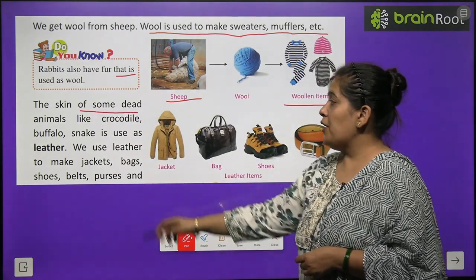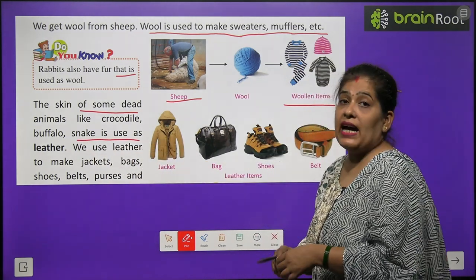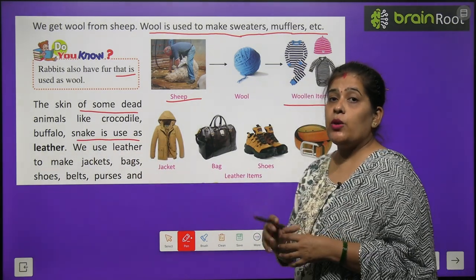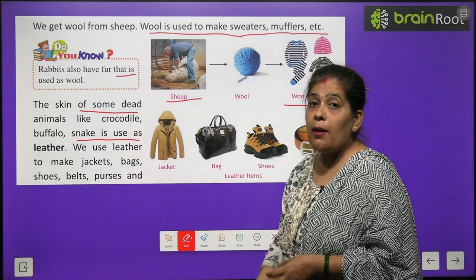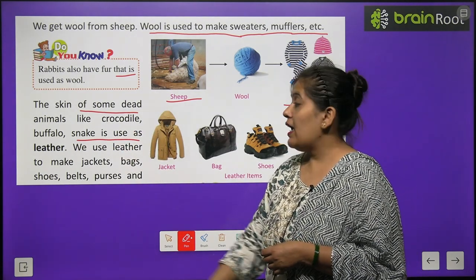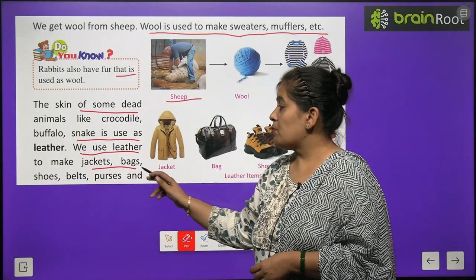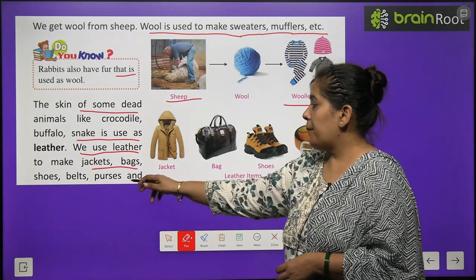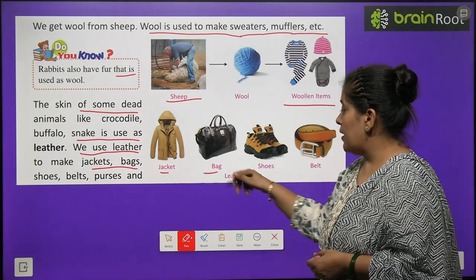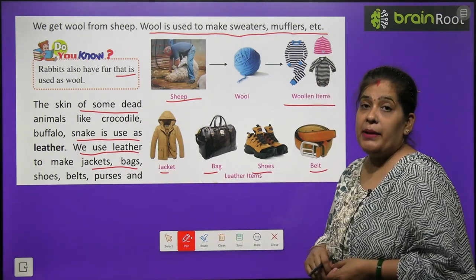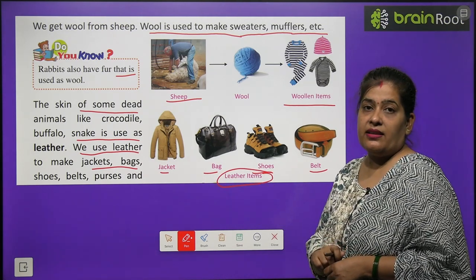The skin of some dead animals like crocodile, buffalo and snake is used as leather. Kuch mare hue janvar — korn korn se? Magarmach, bhaes aur saap. Inki skin se kya banta hai? Leather. We use leather to make jackets, bags, shoes, belts and purses. Aur chamre se kya banta hai? Jacket, purse, shoes aur belt bante hai, jin se hum leather items banate hai.